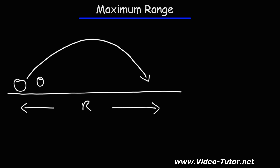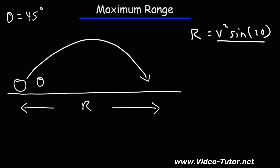Now some of you may know intuitively this angle is 45 degrees, but what we're going to do in this video is calculate that value using calculus. We're going to start with this formula: the range is equal to v squared times sine of 2 theta over g. This formula gives us the range as a function of theta.